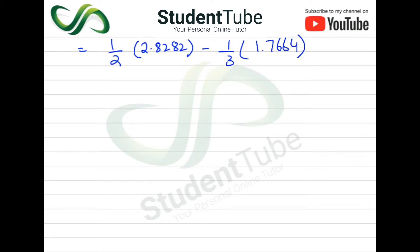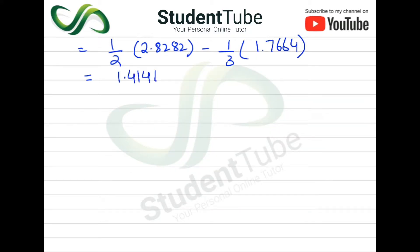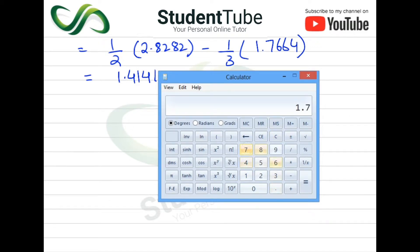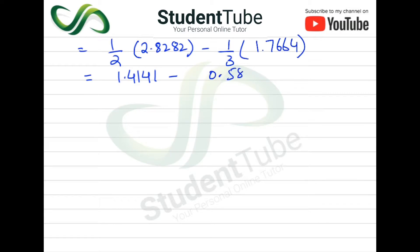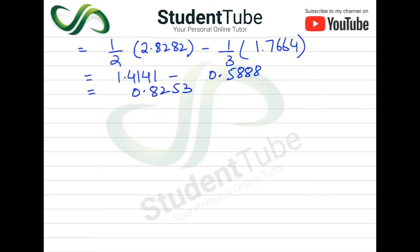अब यहाँ पर 2.8282 को 2 से divide करेंगे: 2.8282 ÷ 2 = 1.4141. फिर 1.7664 को 3 से divide करेंगे: 1.7664 ÷ 3 = 0.5888. अब subtract करेंगे: 1.4141 − 0.5888 = 0.8253.